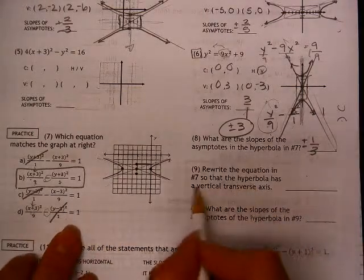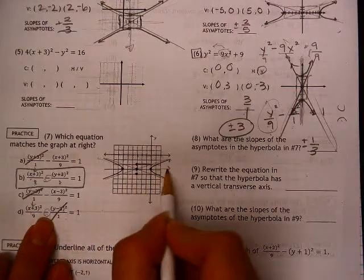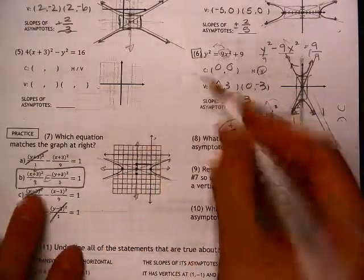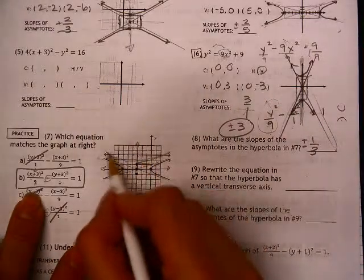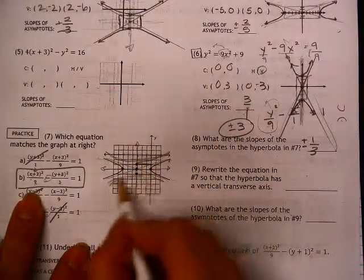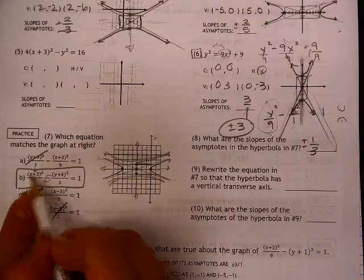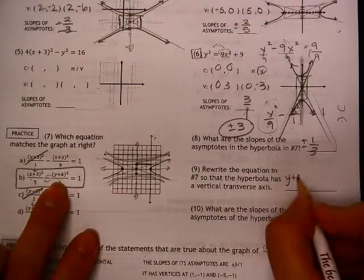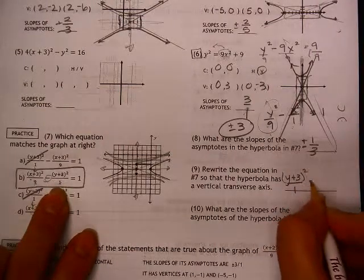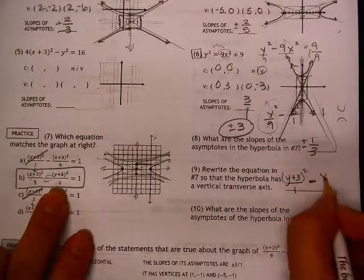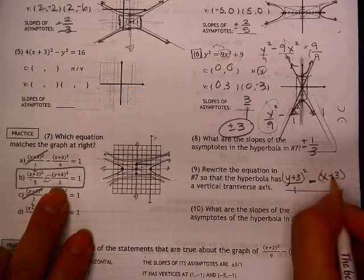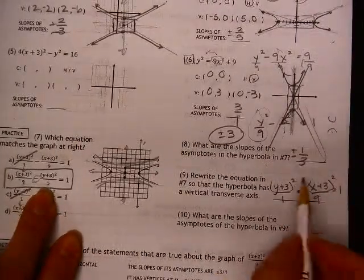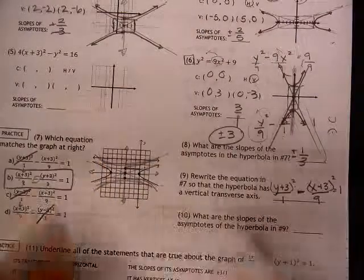Rewrite this so it has a vertical transverse axis. This is the horizontal transverse axis. I want it so as a vertical transverse axis. That means that all I need to do is make it go like this and like this, which is changing the positive and negative. So I want the y to be my positive and my x to be my negative and that will change it so that it is going up and down.